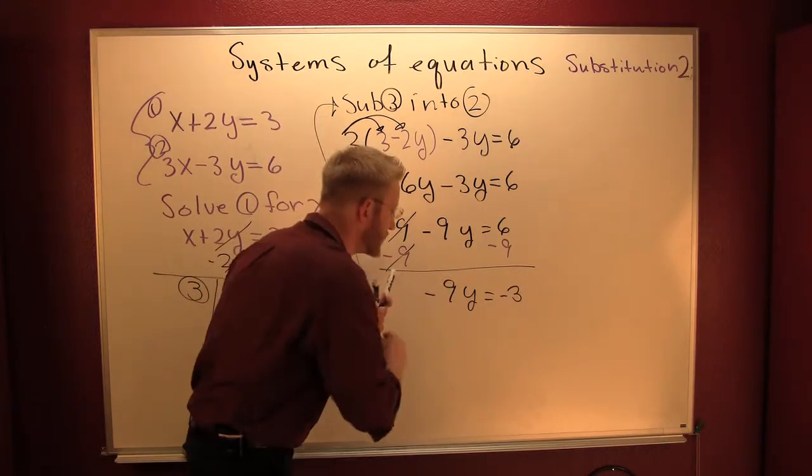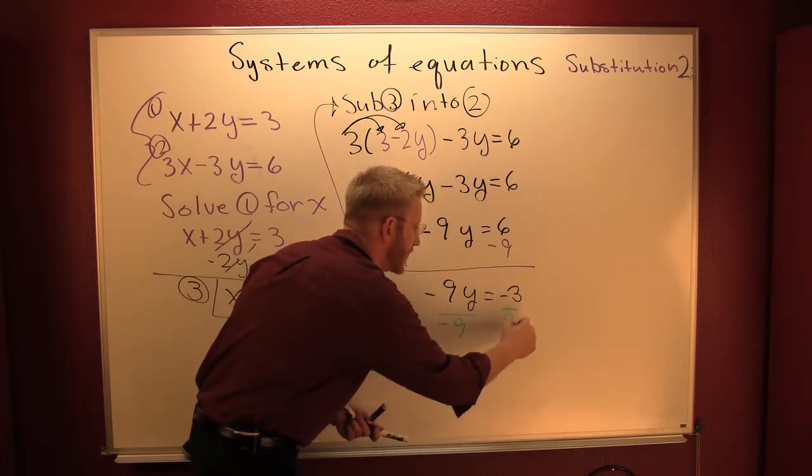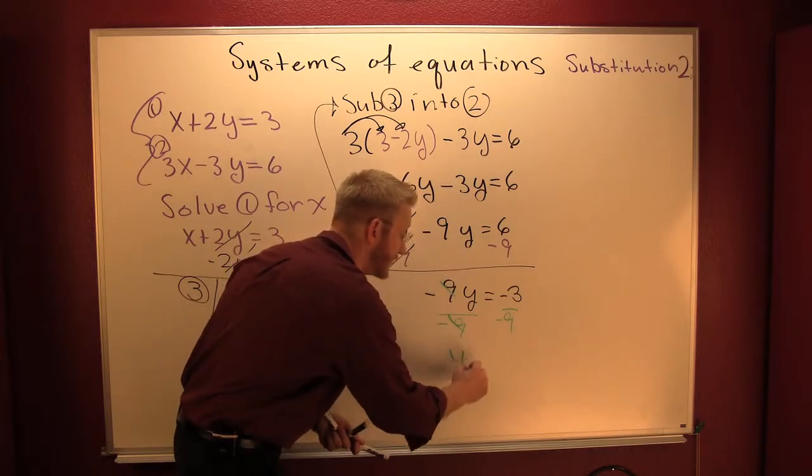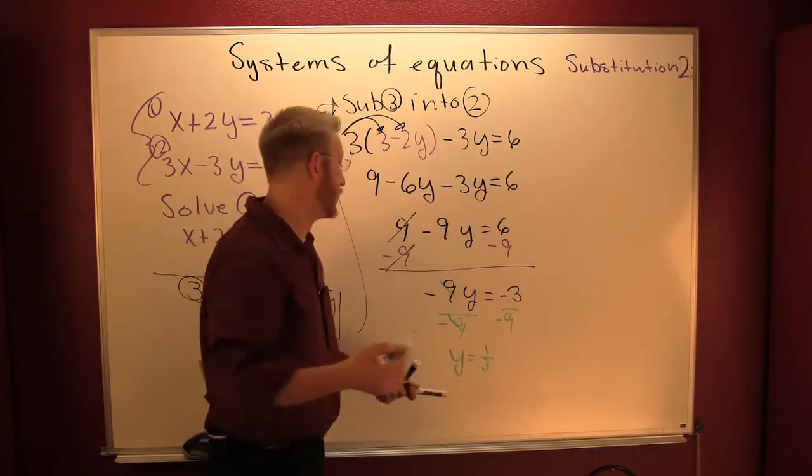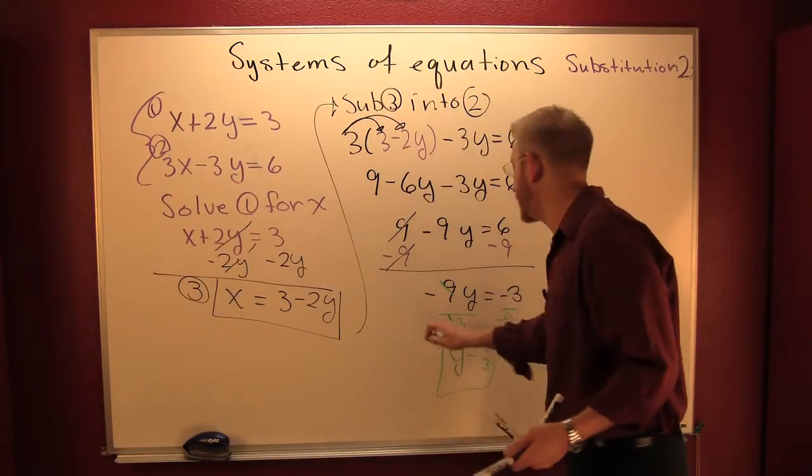Finish him. Divide both sides by a minus nine. By a minus nine on this side. By a minus nine on that side. After the fisticuffs, Y is a one third. Nasty nasty fractions. But we ain't scared. We're gonna call it four.